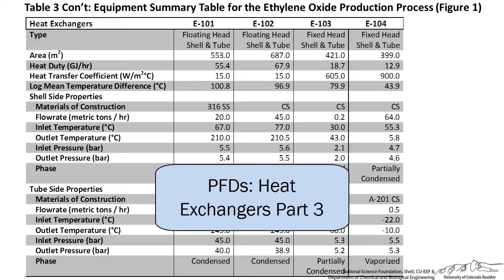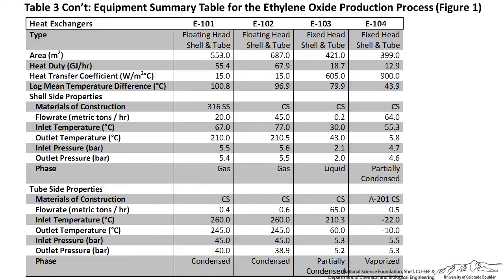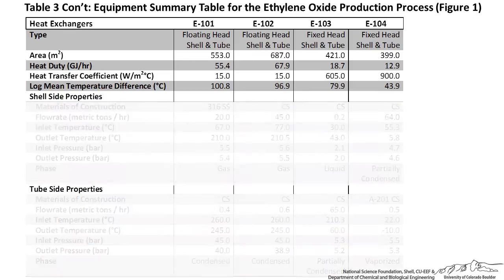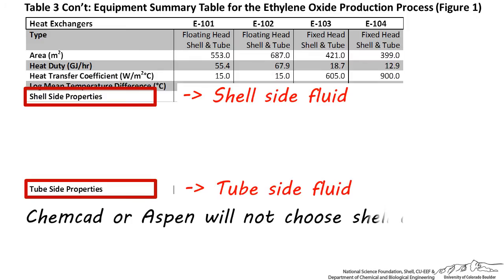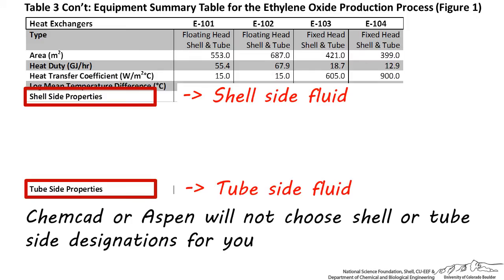Hi there, and welcome to this lecture on Process Flow Diagrams Equipment Summary Tables. My name is Marina Miletic. After we've specified area, heat duty, heat transfer coefficient, and log mean temperature difference on a heat exchanger equipment summary table, we should next designate which stream is shell-side and tube-side. Remember that ChemCat or Aspen will not choose the shell or tube-side fluids for you — you must decide which stream is best to assign to either side.